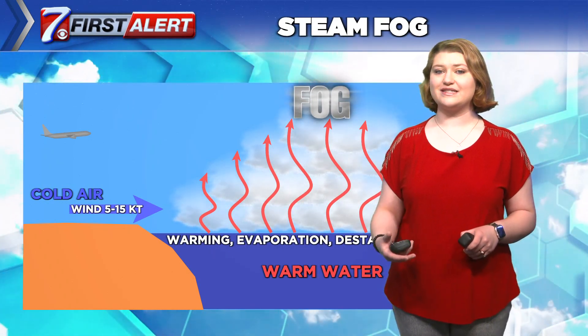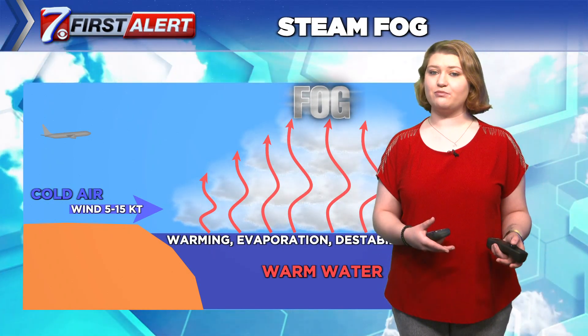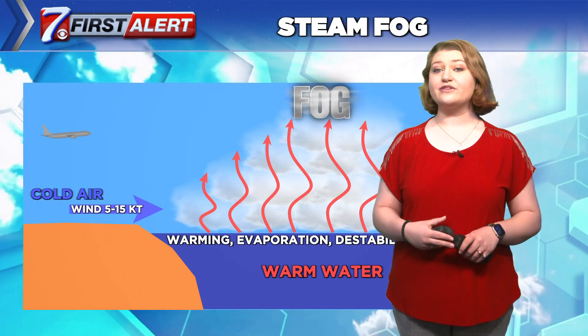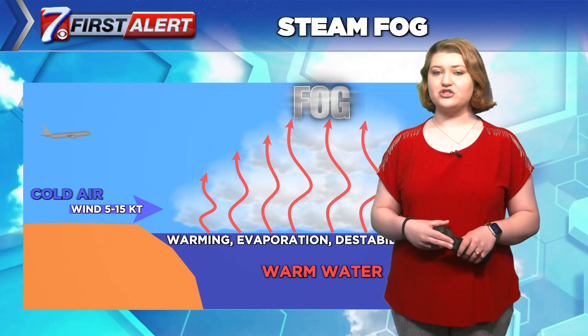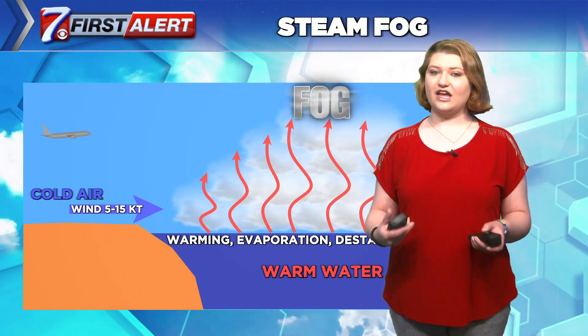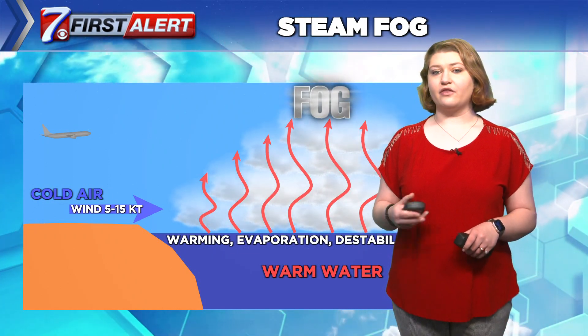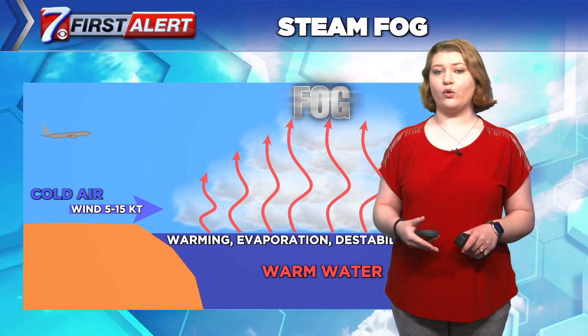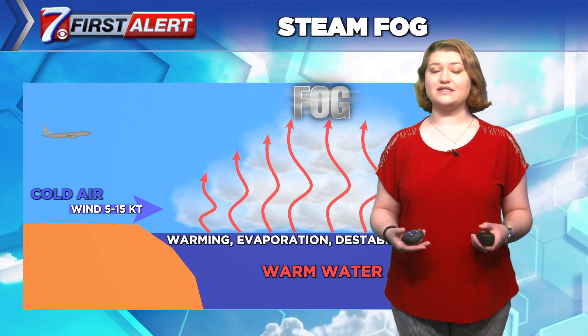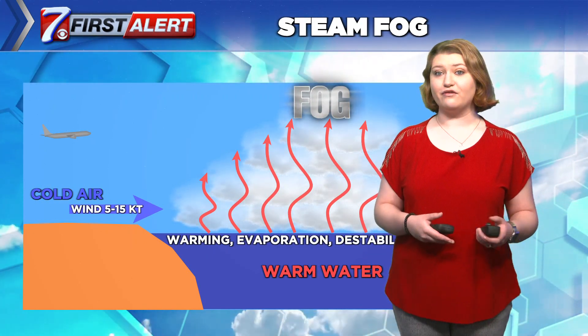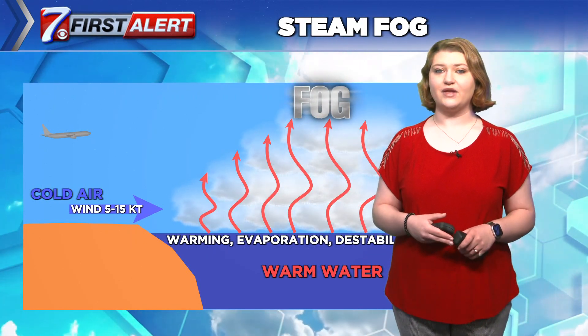Steam fog is persistent, can be widespread, and there is low level convection present. The convection is usually weak, though. The larger the body of water, the more persistent and widespread the fog will be.